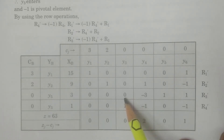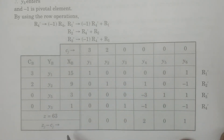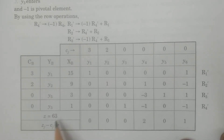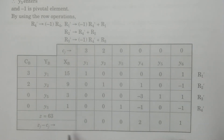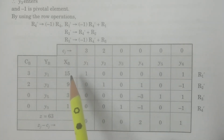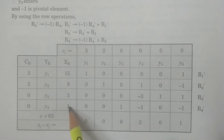After doing the relevant row operations, you get the next simplex table. Calculate Z: CB × XB = 3×15 + 2×9 + 0×3 + 0×1 = 63. The ZJ − CJ net evaluations are 0, 0, 0, 2, 0, 1. Now observe the sign of XBI: the values are 15, 9, 3, 1 — all are positive. Net evaluations are also non-negative.